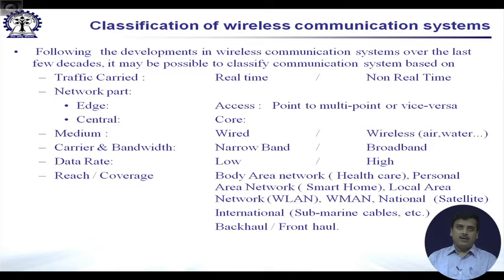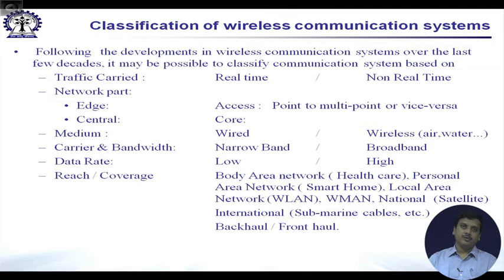Data rate is also a typical consideration — whether it is low or high data rate. Sensor networks generally involve low data rate, whereas broadband wireless communications involve very high data rates. Another way of classifying networks is by reach or coverage.